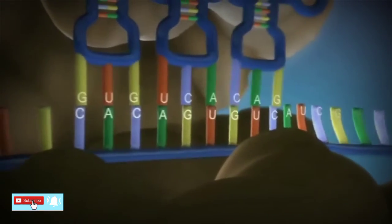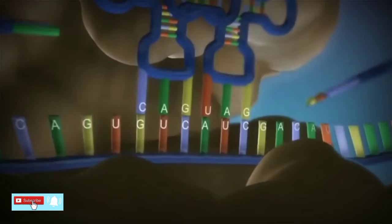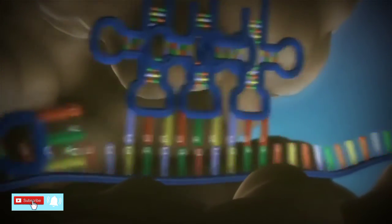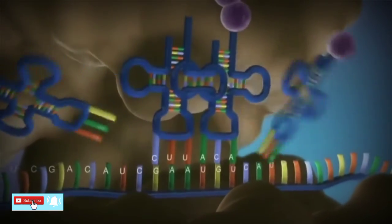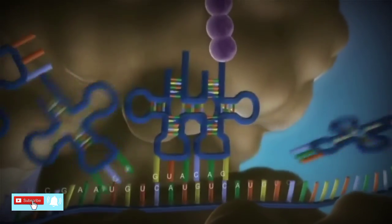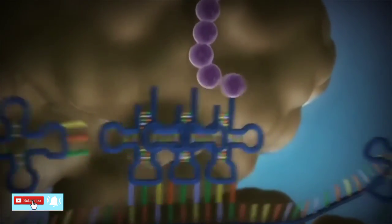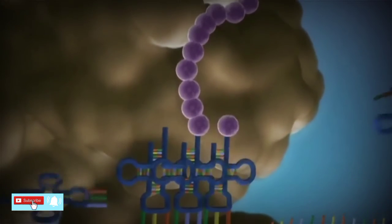The messenger RNA is read three bases at a time. As each triplet is read, a transfer RNA delivers the corresponding amino acid. This is added to a growing chain of amino acids.